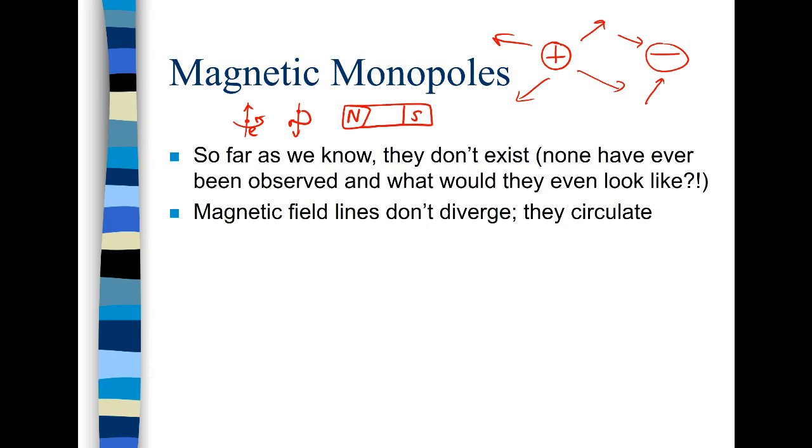So one thing that's interesting about magnetic field lines is that unlike electric field lines they don't diverge. So if I have a positive charge the field lines sort of spread out. They diverge. Mathematically they are passing through a surface and they don't come back in. But magnetic field lines tend to circulate.